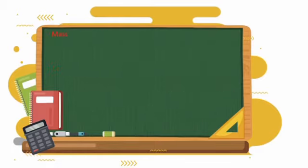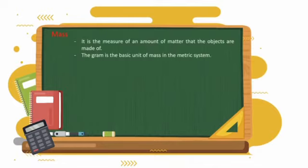Mass: It is the measure of an amount of matter that the object is made of. The gram is the basic unit of mass in the metric system.